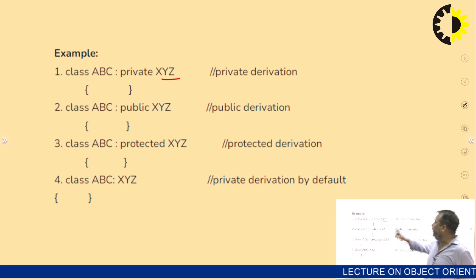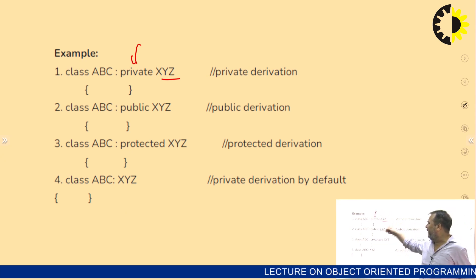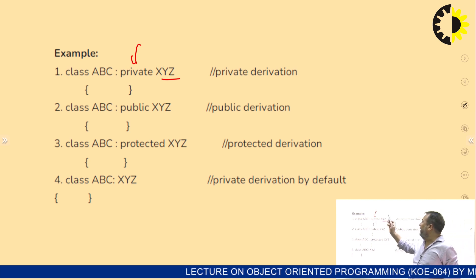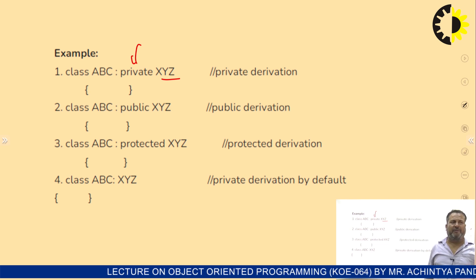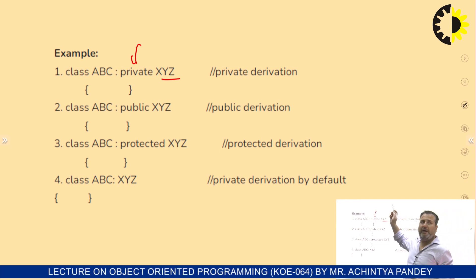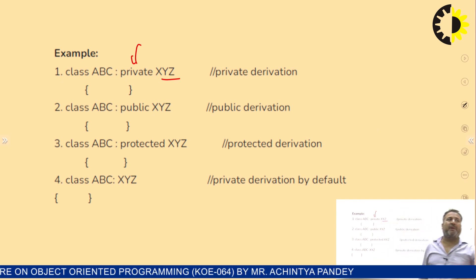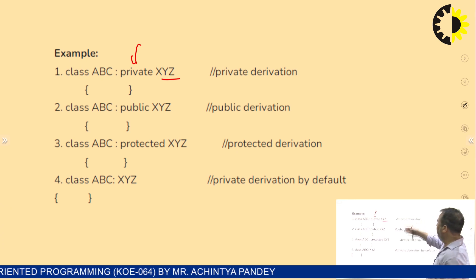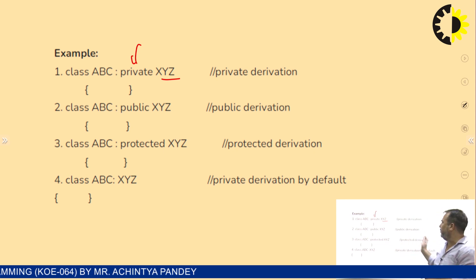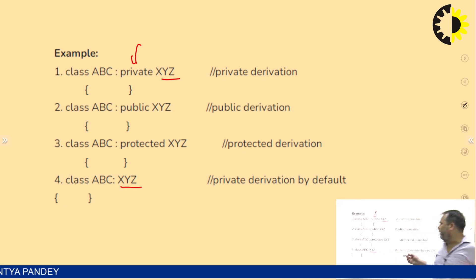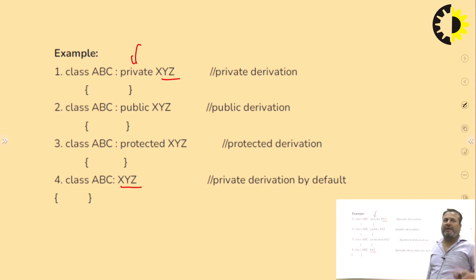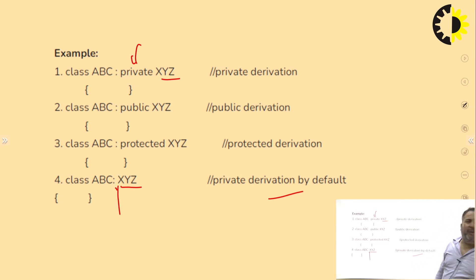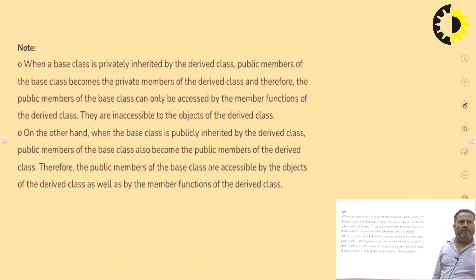The access specifiers are private, public, and protected. If ABC inherits privately from XYZ, neither private nor public data of XYZ can become members of ABC. This distinction is shown in the next slides. If no access specifier is specified, by default it will take private — so private derivation is the default. These are the three modes: public mode, protected mode, and private mode.